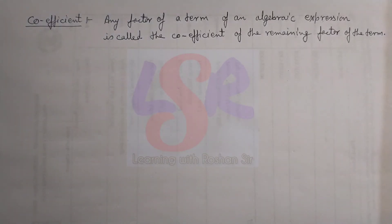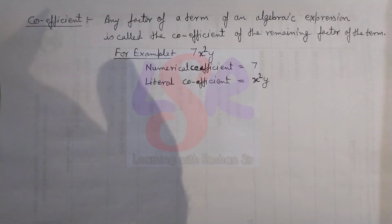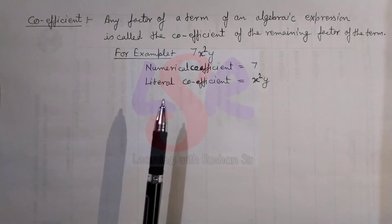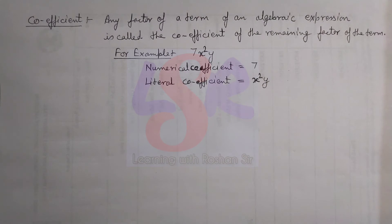Now we are having the coefficient. Any factor of a term of an algebraic expression is called the coefficient of the remaining factors of the term. For example, the numerical coefficient for this example is 7. Literal coefficient is x square y. And we can also find the coefficient of specific variables.